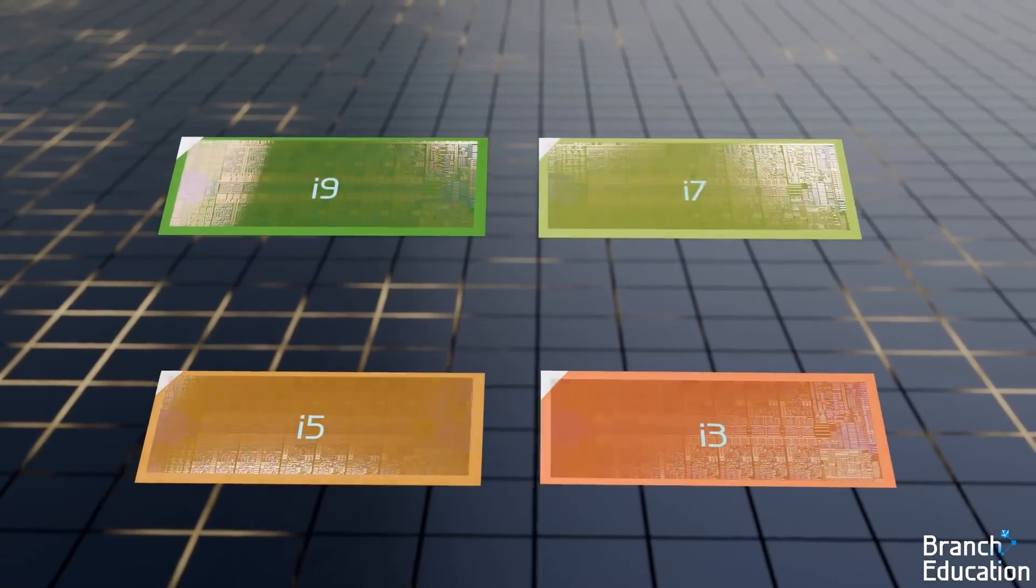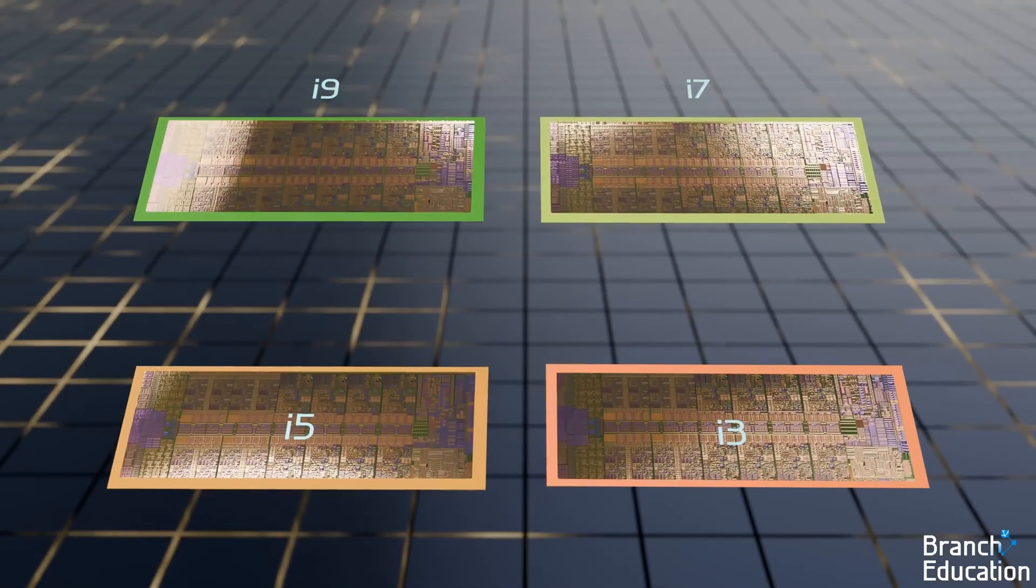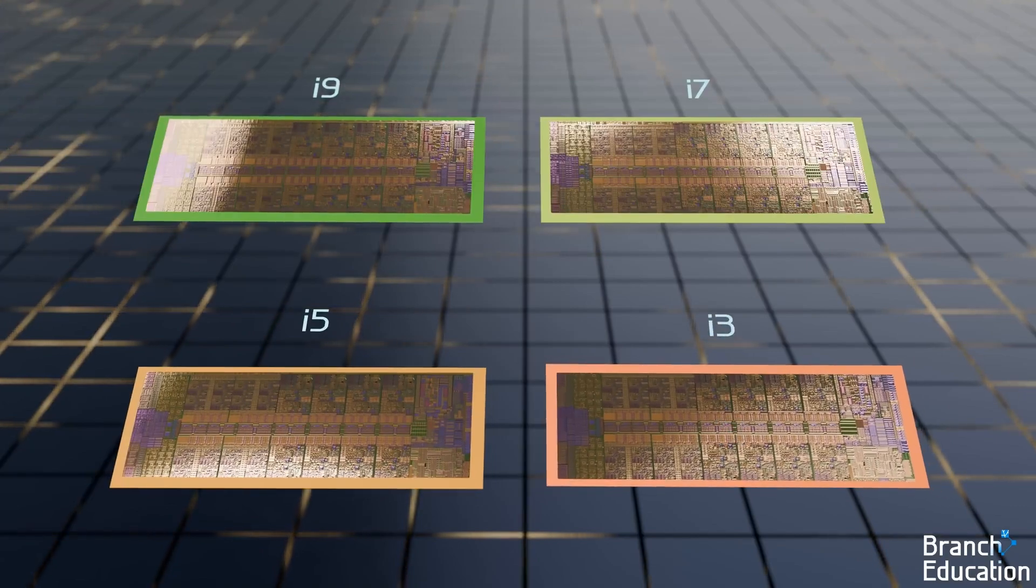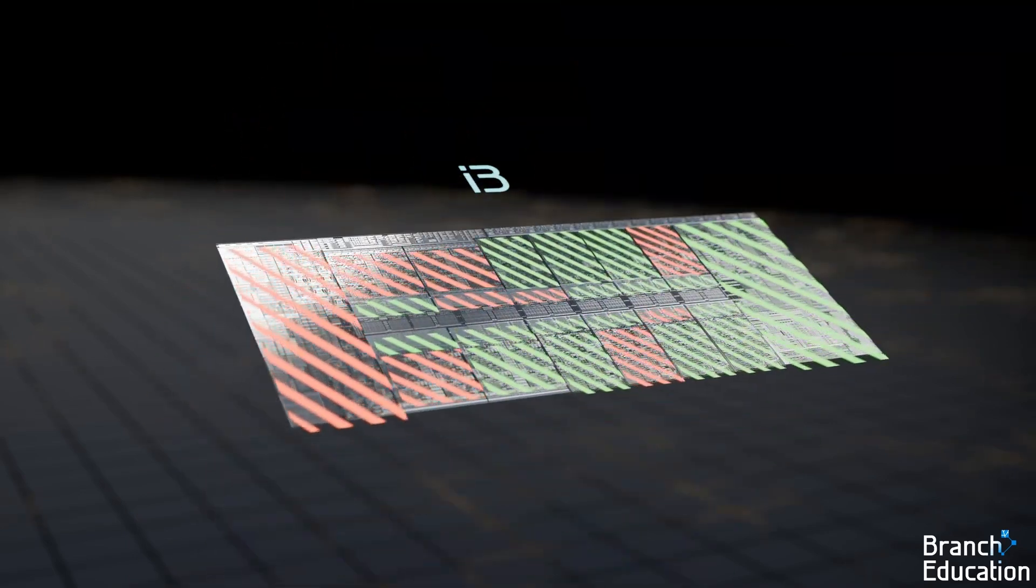These Intel 13th Gen processors are sold as an i9, i7, i5, or i3, depending on how many cores are functional with different product lines of CPUs whose onboard integrated graphics sections are defective.